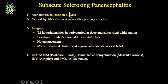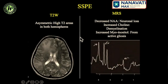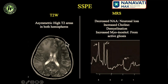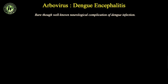Subacute sclerosing panencephalitis (SSPE) is another relatively common viral infection in our country. It's caused by measles virus, occurring years after primary infection or sometimes after vaccination. You get symmetric and asymmetric hyperintensities typically starting with frontal and parietal lobes and then eventually affecting the temporal lobe. Outcome is very dismal — it's a progressive disorder. Initially you get brain swelling and then atrophy, with decreased NAA, increased choline, and increased myo-inositol because of demyelination and gliosis.